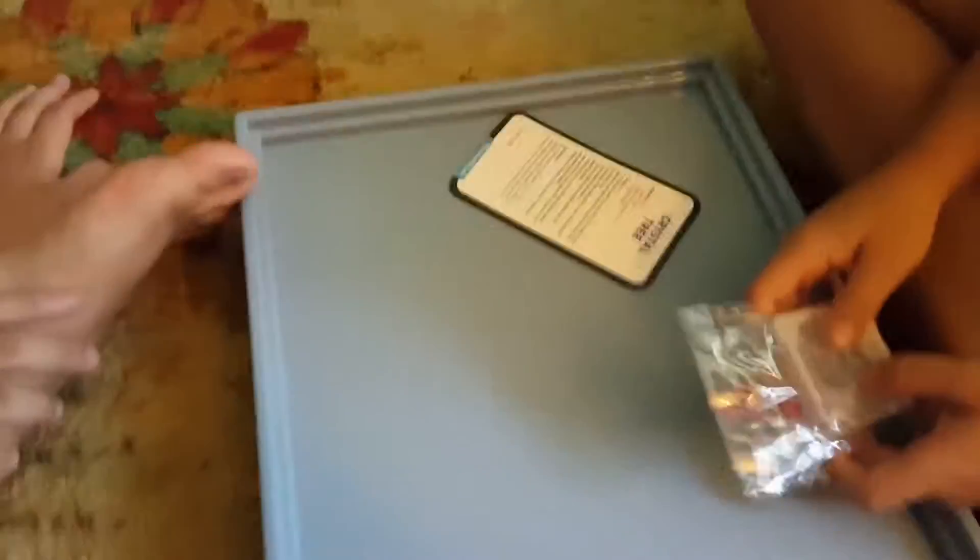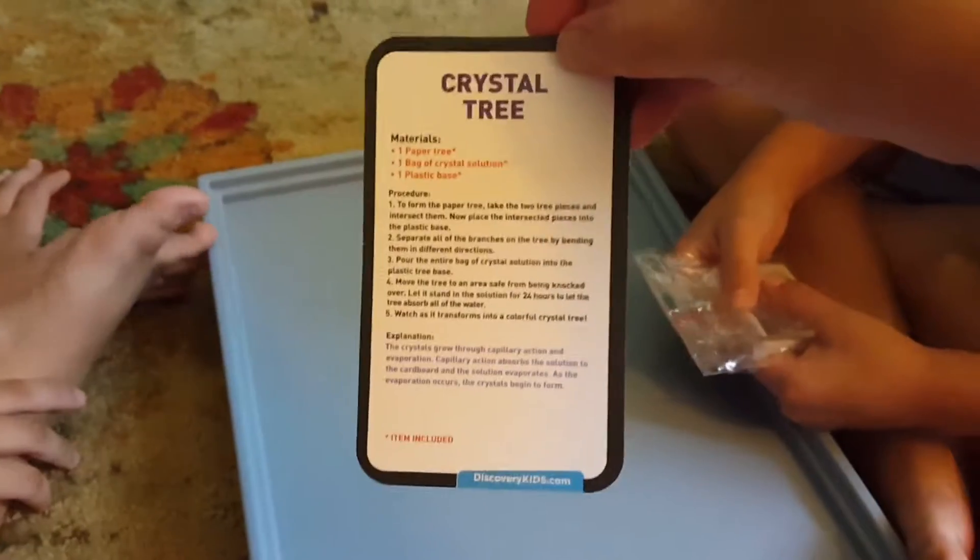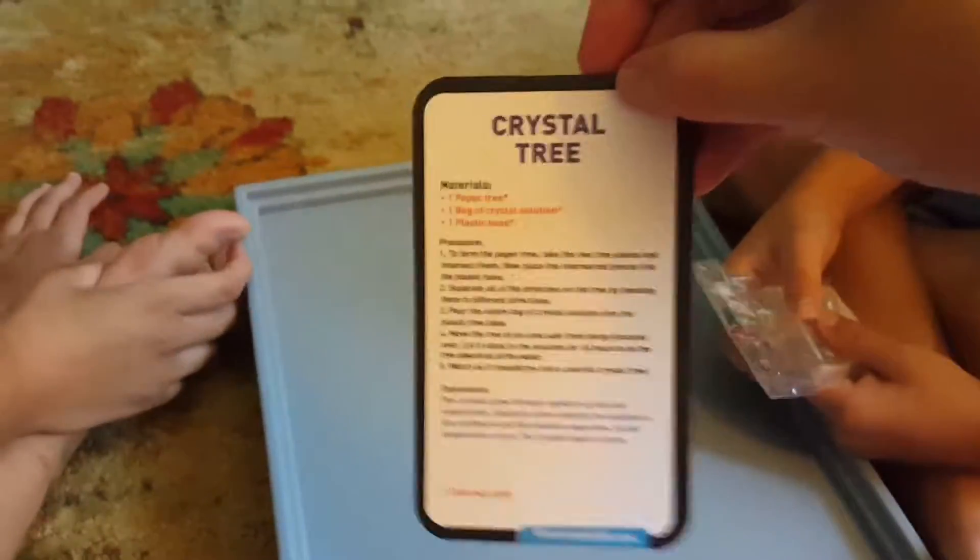So what we're doing today is, it's a Discovery Kids, and we are making a crystal tree. As you can see, here are the directions, and we're going to get set up, and then we're going to get back to you.